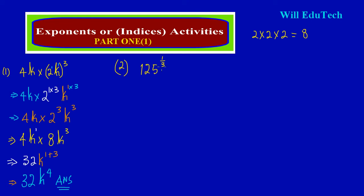What this is really saying — and you can always visit the fractional rule — when a base is raised to a fraction, it can be rewritten in surd/root form. The denominator becomes the root. So the 3 in my denominator becomes the cube root, and I'm taking the cube root of the base, which is 125. The numerator becomes the power.